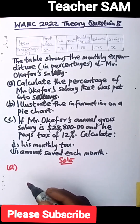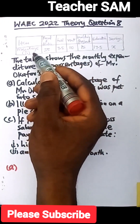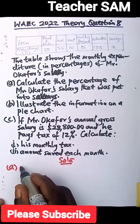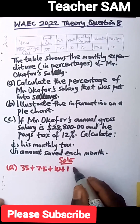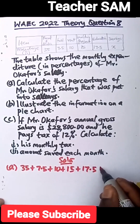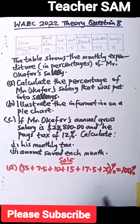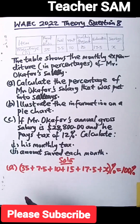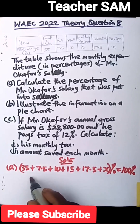We solve for part A: calculate the percentage put into savings. Since all percentages must total 100%, we write: 35 + 7.5 + 10 + 15 + 17.5 + X = 100%. Adding the known values: 35 + 7.5 + 10 + 15 + 17.5 = 85.